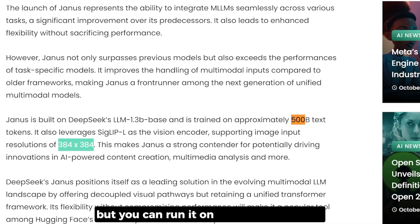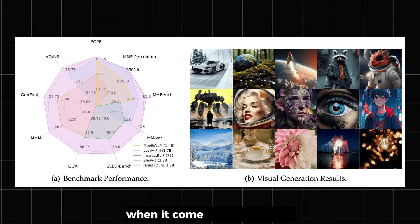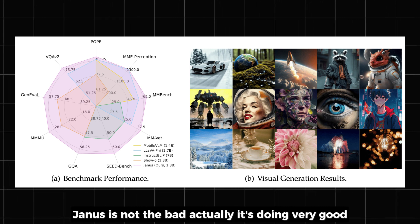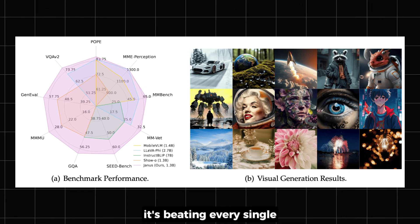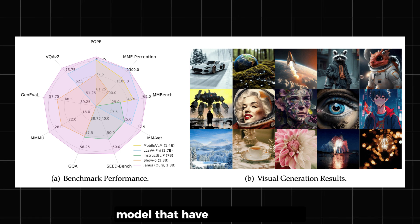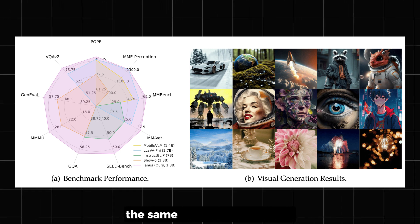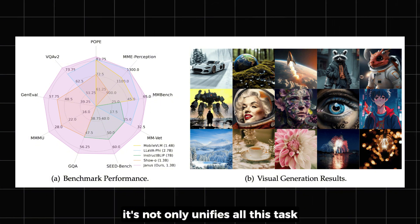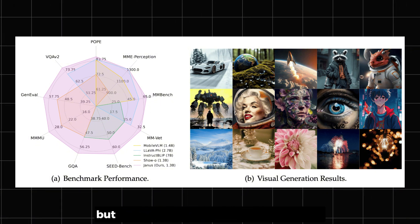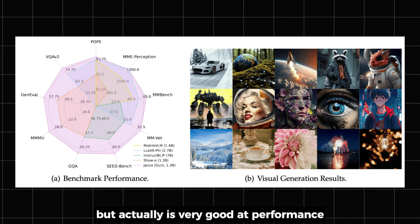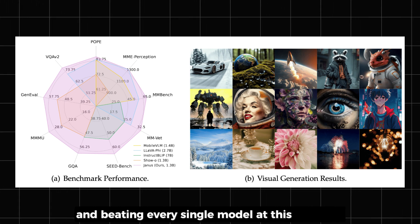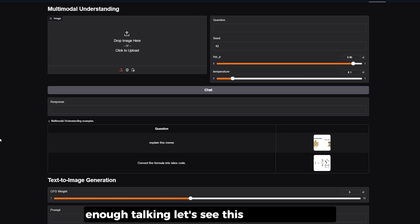When it comes to performance, Janus is actually doing very well — it's beating every single model that has attempted to do the same thing. It not only unifies all these tasks under one model, but it also achieves very good performance, beating every model in this category.